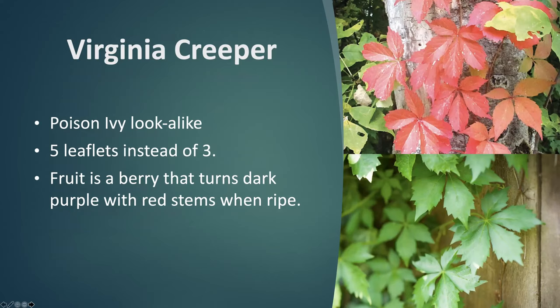The next plant is Virginia creeper, which looks very similar to poison ivy and even turns that same reddish color late in the season. But count the leaves: one, two, three, four, five — that's not three. Virginia creeper has five leaflets, not three, and there's no chemical on it known to cause a rash. We put it in this section simply because it's very commonly confused for poison ivy, but luckily this is not a plant that really wants to hurt you.